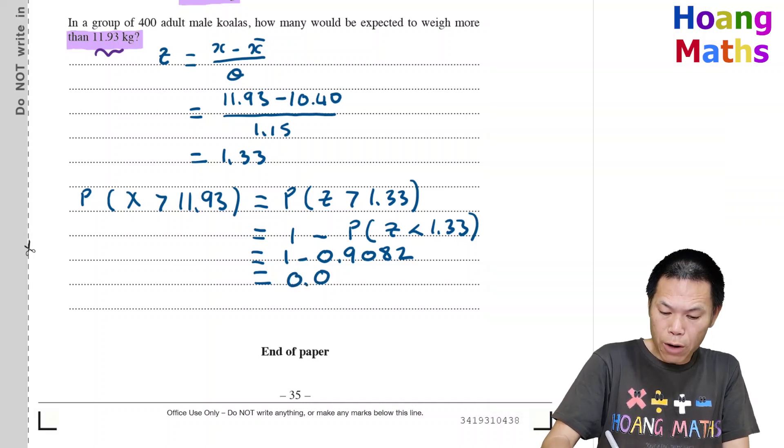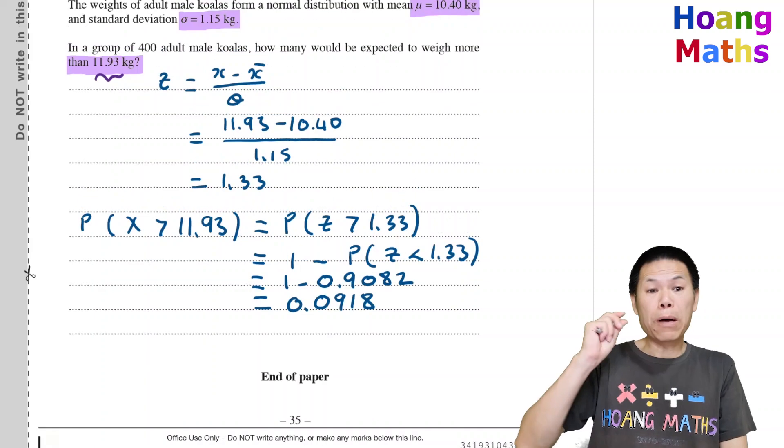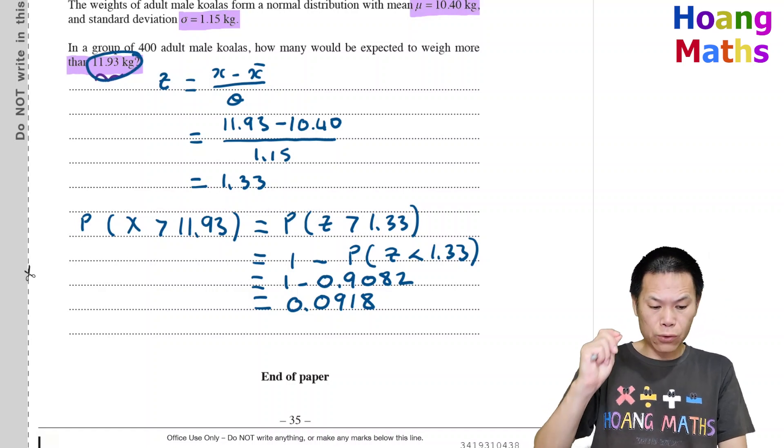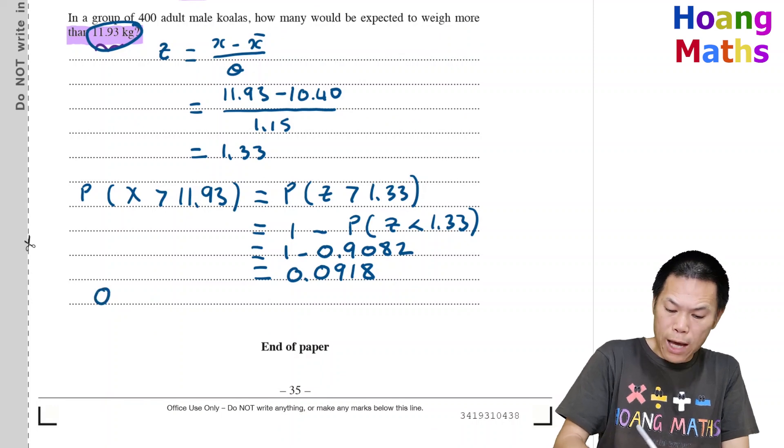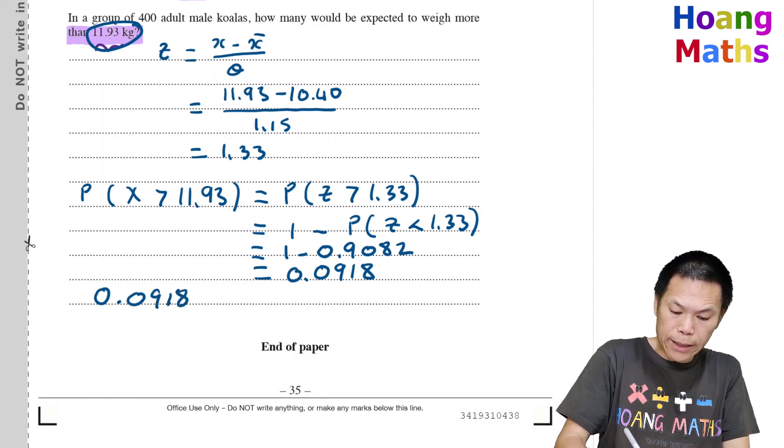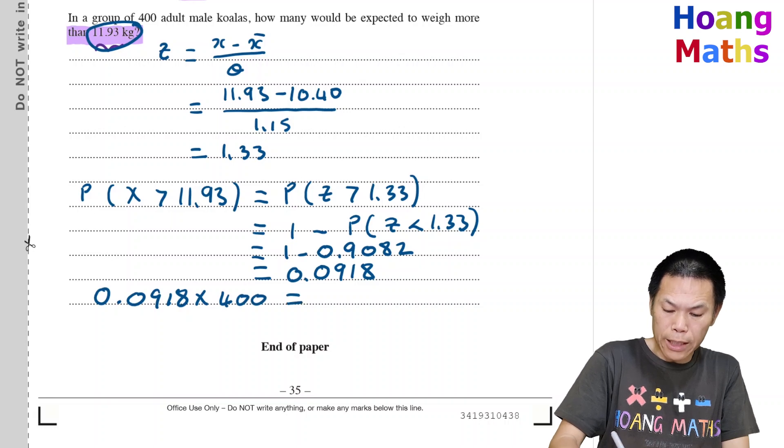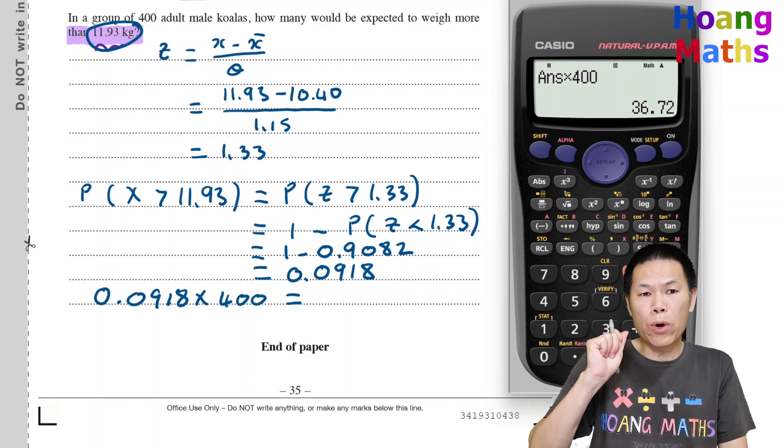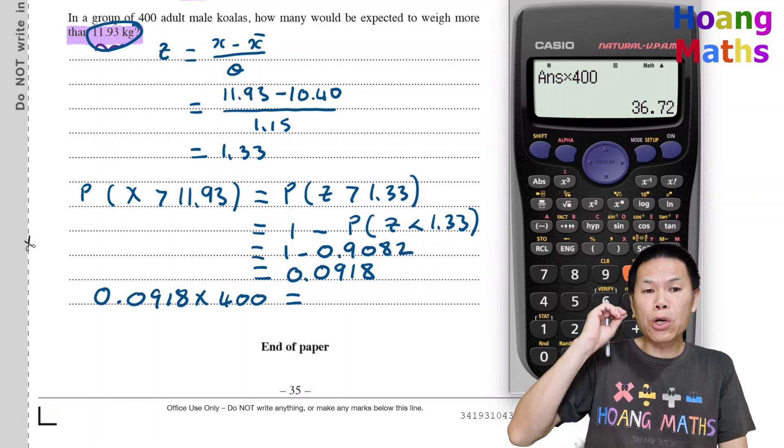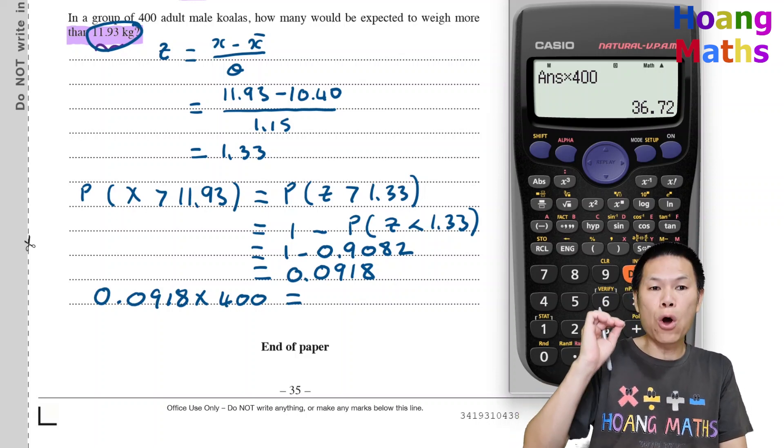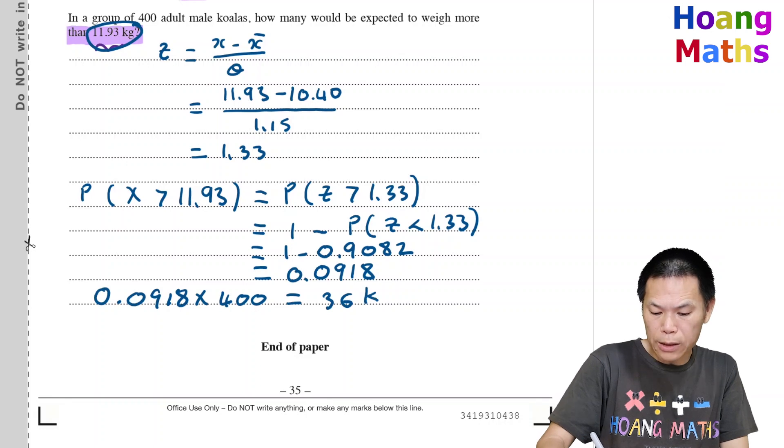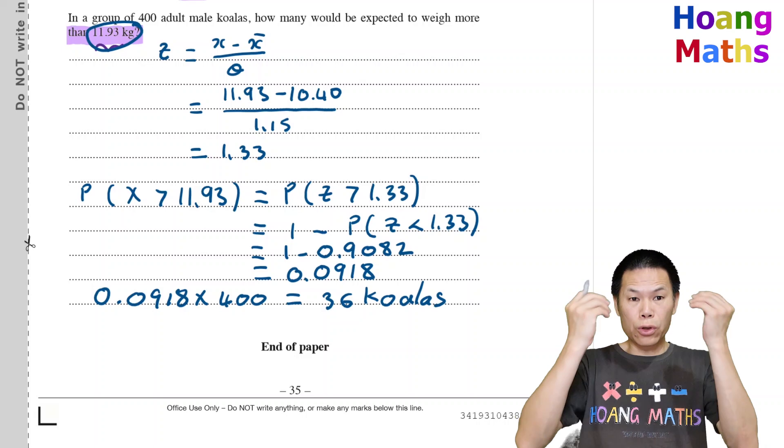0.0918. But we need to find the expected number of koalas greater than 11.93 kilograms. The expected number is 0.0918 times 400, which equals 36.72. Because we're talking about the number of koalas, we need a whole number, so 36 koalas.